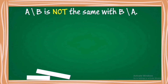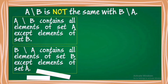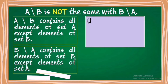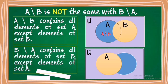Reminder: A minus B is not the same as B minus A. A minus B contains all elements of set A except elements of set B, while B minus A contains all elements of set B except elements of set A. Clearly, A minus B is not the same as B minus A.